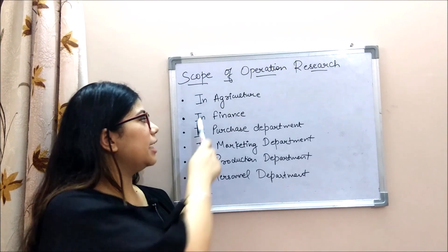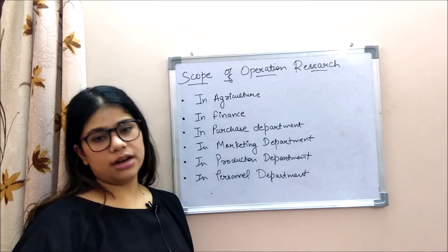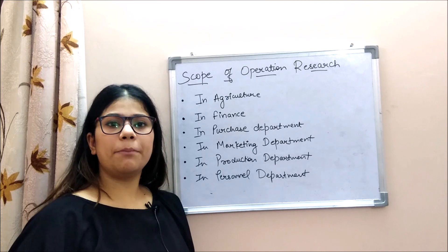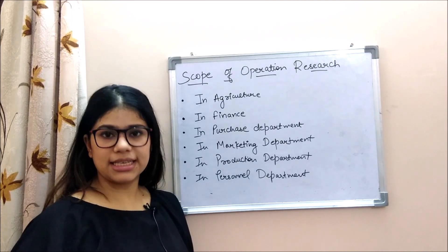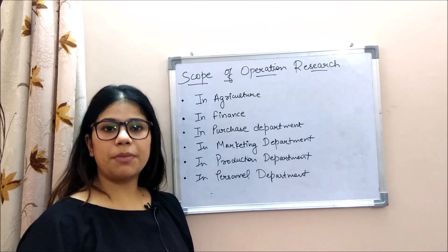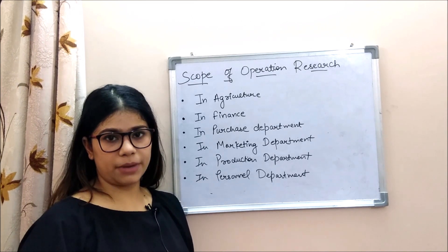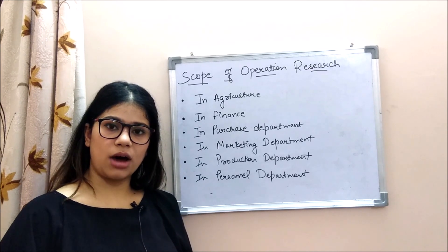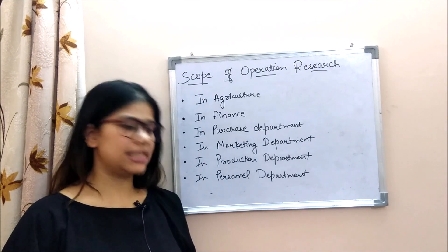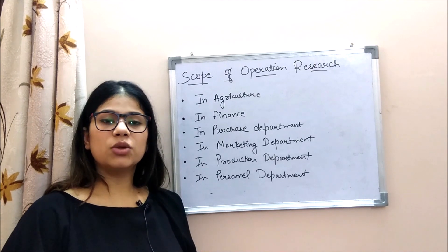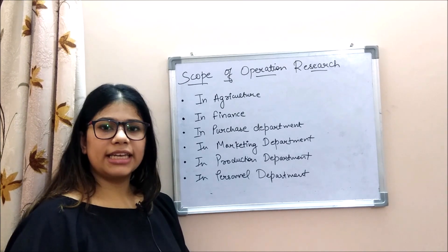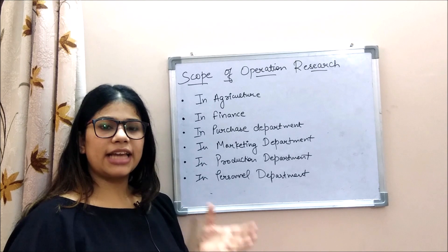The next scope is the finance department. Due to economic crises, it is important for organizations to plan policies and estimates to get maximum profit. OR helps the finance department determine different policies such as cash flows and replacement policies, helping organizations allocate their finances effectively.